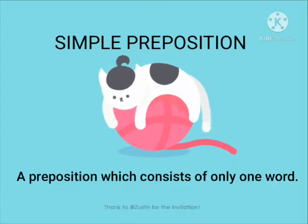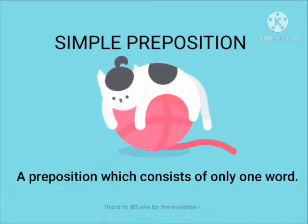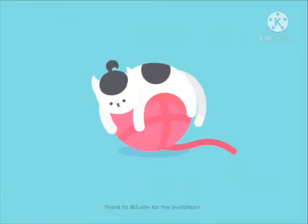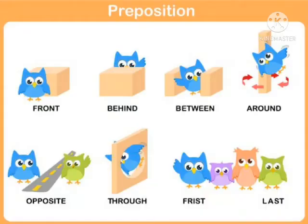A simple preposition is the one which is made up of only one word. Here you can see some examples of simple prepositions on your screens: in, on, under, over, behind, between, out, and for, and some similar few examples.